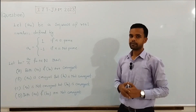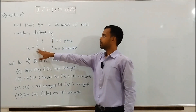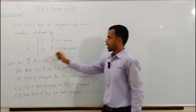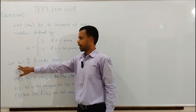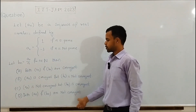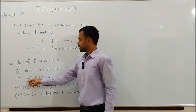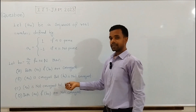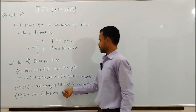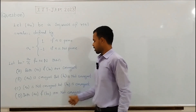The question is from real analysis. Let an be a sequence of real numbers defined by an = 1 if n is prime, and an = -1 if n is not prime. Let bn be a sequence defined as bn = an/n for n belonging to ℕ. The options are: (a) both an and bn are convergent; (b) an is convergent but bn is not; (c) an is not convergent but bn is convergent; (d) both an and bn are not convergent.